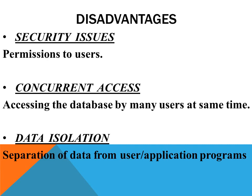The third disadvantage here is data isolation. Data isolation means, as the name suggests, data should be separated from users or the application programs. But in case of the traditional file system, the user and the data are both linked — as you can see in the diagram of the sales department and payroll department, file 1 is attached to the department and file 2 is attached to the department. There is no basic isolation between the data and the user. This is another security issue — the data might get corrupted or changed by the user or the application programs, and if such a situation arises, that can cause very big security issues in a large database system.